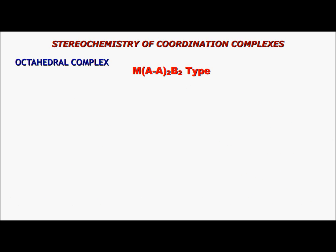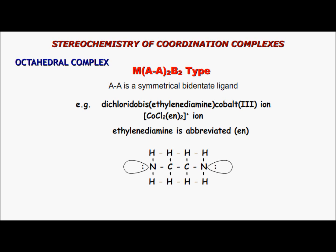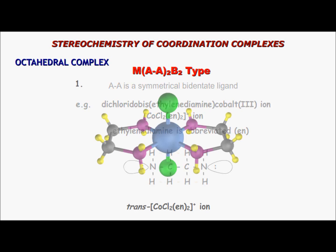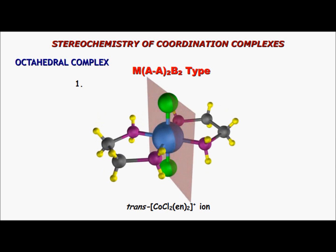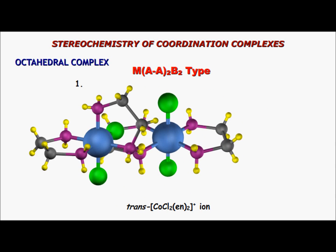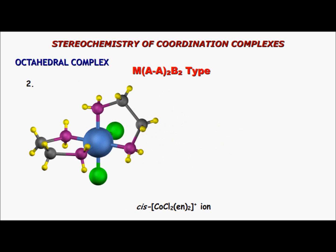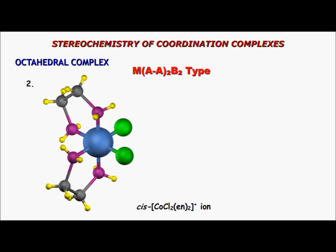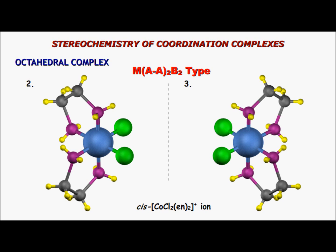Next comes the MAA2B2 type, where AA is a symmetrical bidentate ligand. Dichlorobisethylenediamine cobalt(III) ion is an example. Three isomers are possible: the trans isomer has a plane of symmetry, while the cis isomer is optically active because it has no plane of symmetry, and the cis isomer has an enantiomer.